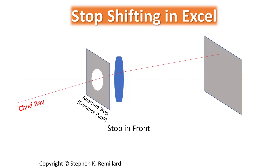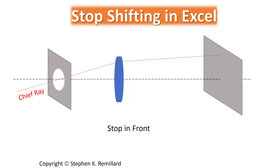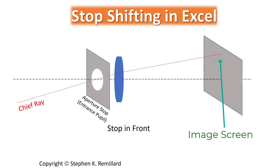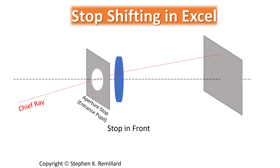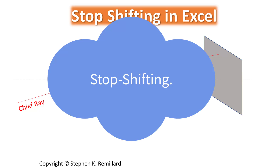An aperture stop is a hole that you put either in front of the lens or behind the lens. For a single lens, if you put a card with a hole in it in front, the aperture stop has the entrance pupil. The chief ray always passes through the center of the entrance pupil, and if you move the aperture stop, you move which ray serves as the chief ray. The movement of an aperture stop is referred to as stop shifting.